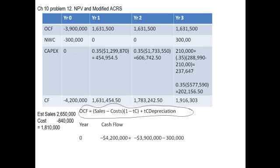For year zero, all we have is the purchase of the asset — the $3.9 million outflow — and the outflow for NWC, the net working capital. So in year zero, the cash flow is negative $4.2 million, because it's a cash outflow.